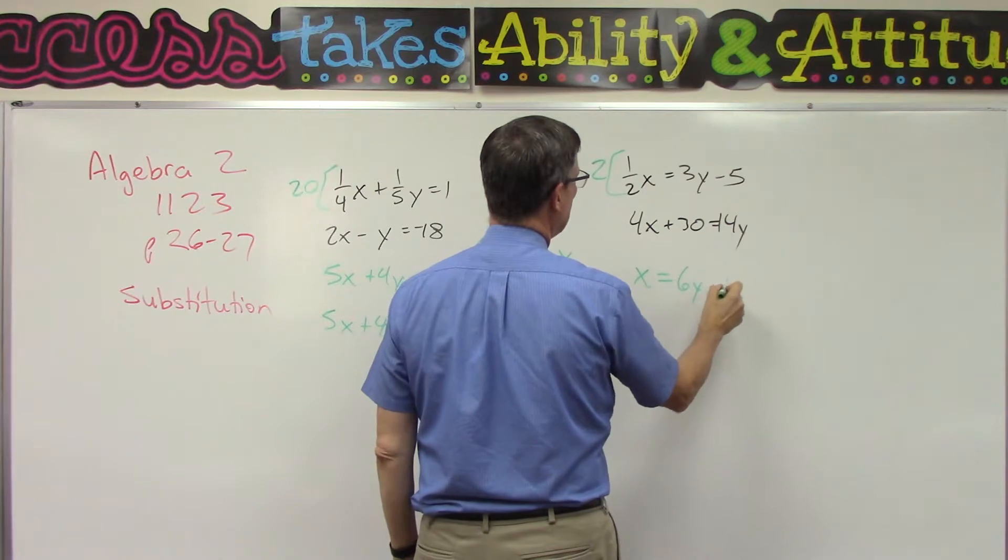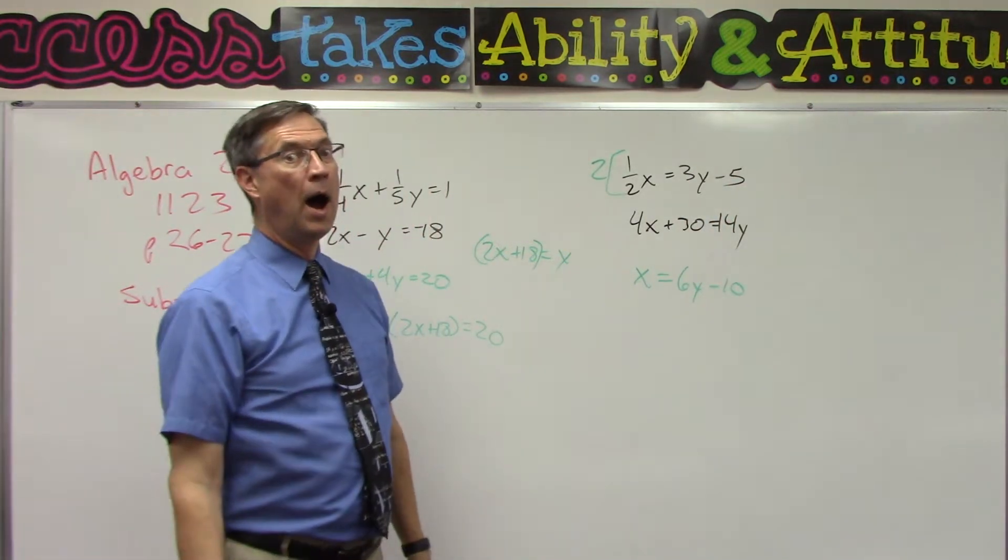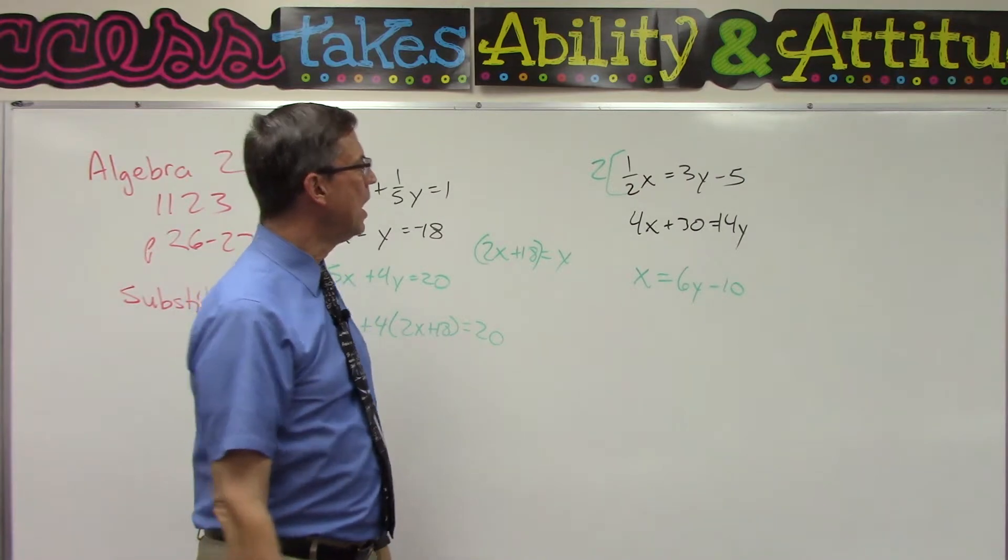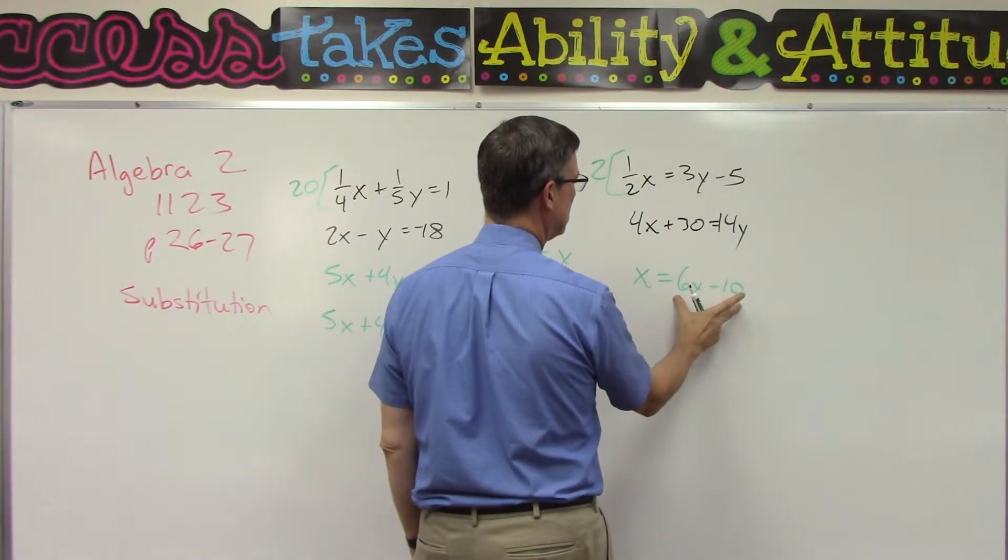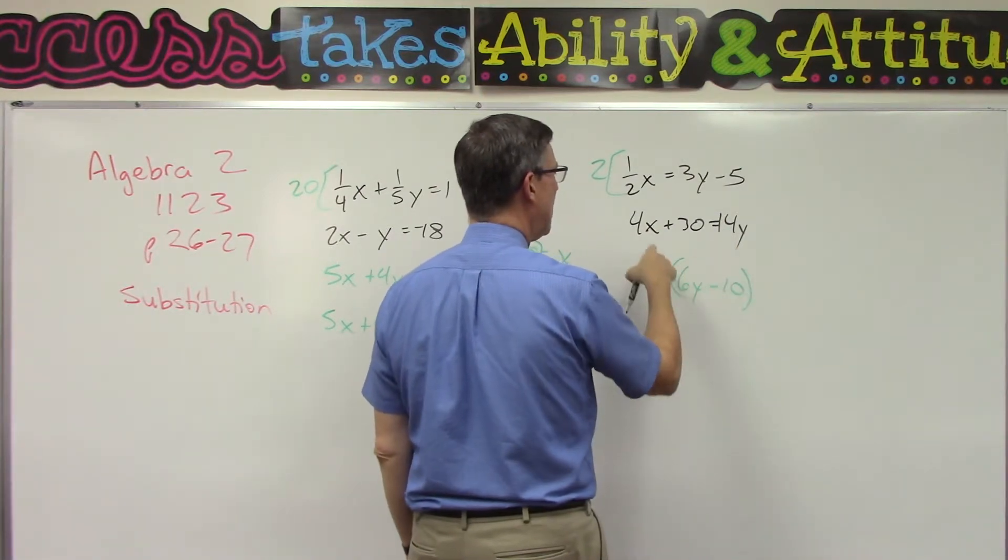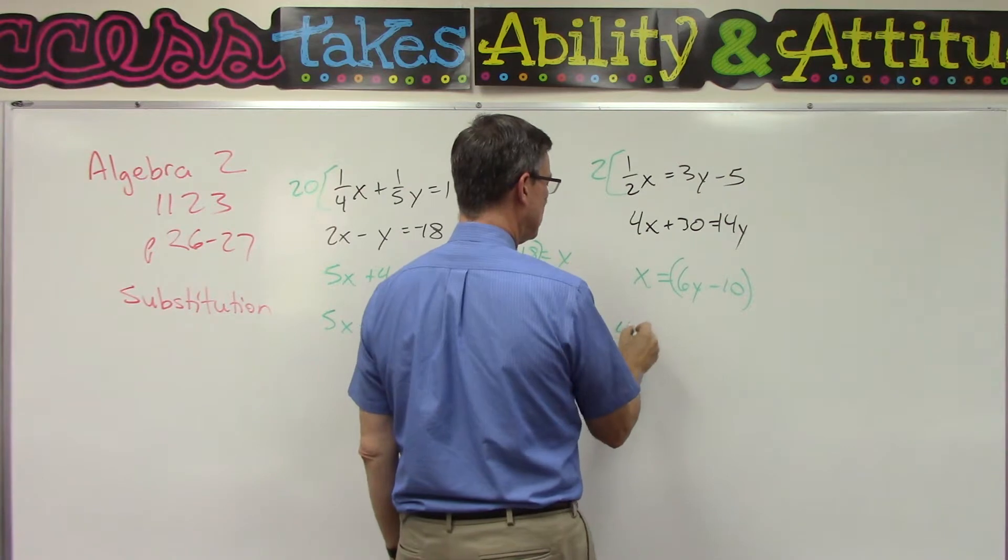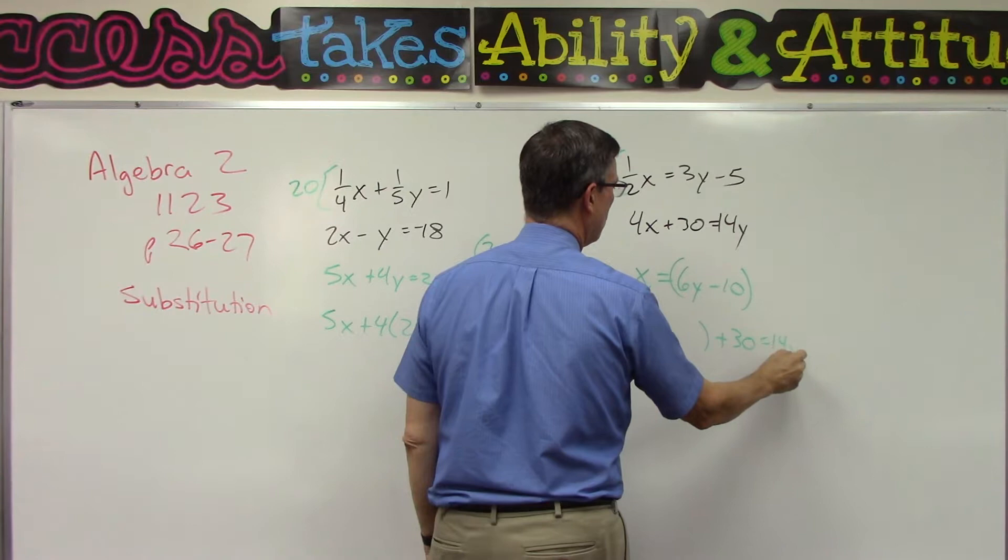That will give me, for this equation, X equals—and that becomes 6y, and then we distribute the 2 times negative 5 to get negative 10. Look, yay! This is already solved for X. X equals this quantity, and now you can substitute that in place of X here.